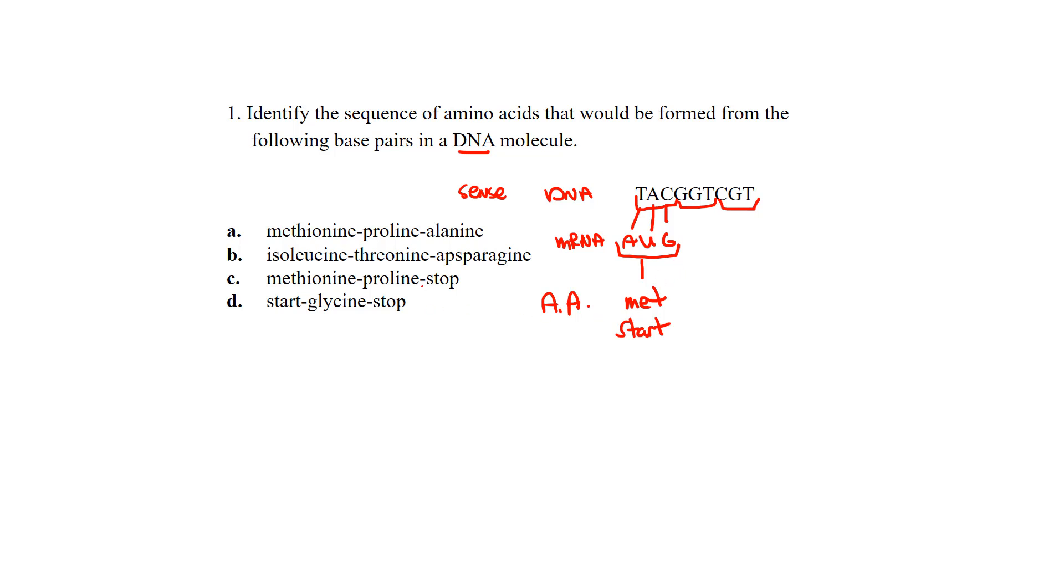So when we see that, process of elimination, first one we know is MET, so we can get rid of B, and we can get, oh, I guess we have to keep D because that also is a start codon, like we said, but we eliminated one of them already.